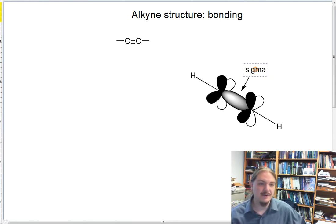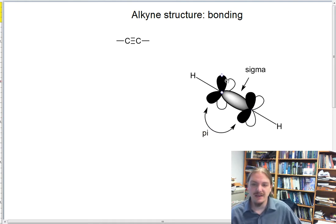And then there are also pi bonds formed by the overlap of p orbitals on the carbon atoms as well. And there's one pi bond in one plane and a perpendicular pi bond in another plane.